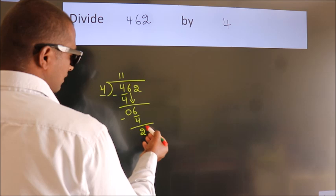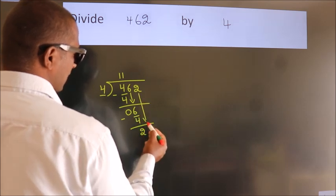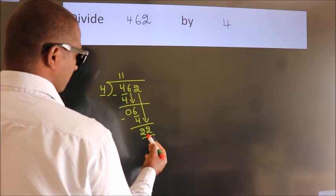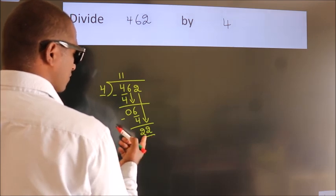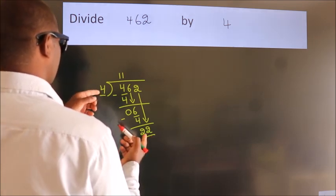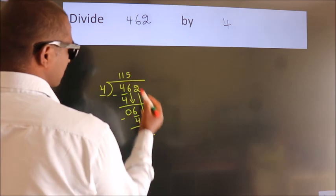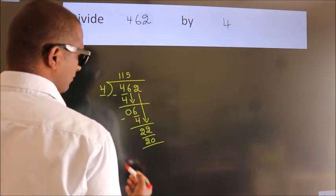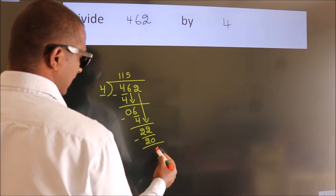After this, bring down the next number. So, 2 down, giving us 22. A number close to 22 in the 4 table is 4 fives, 20. Now we subtract. We get 2.